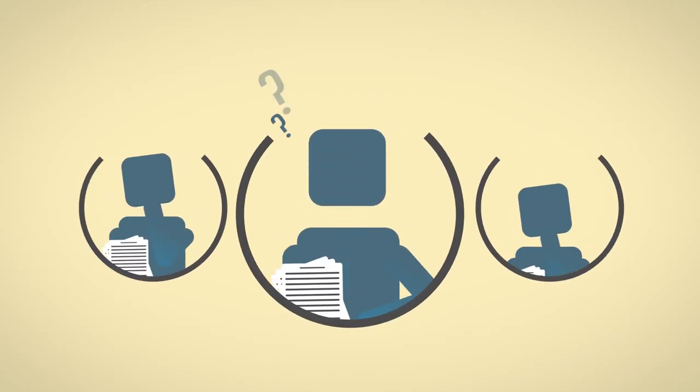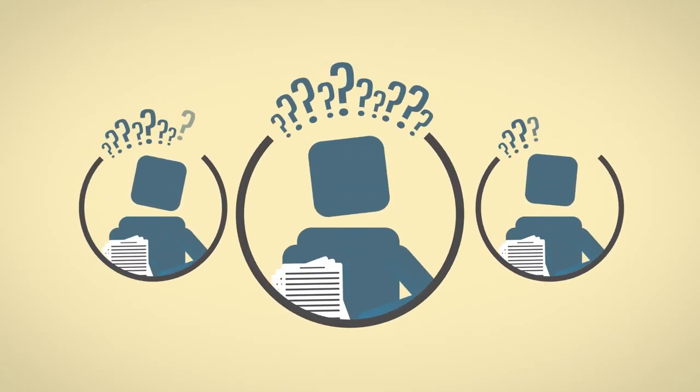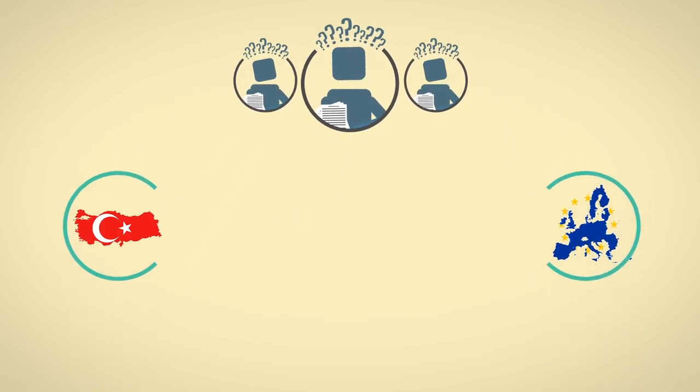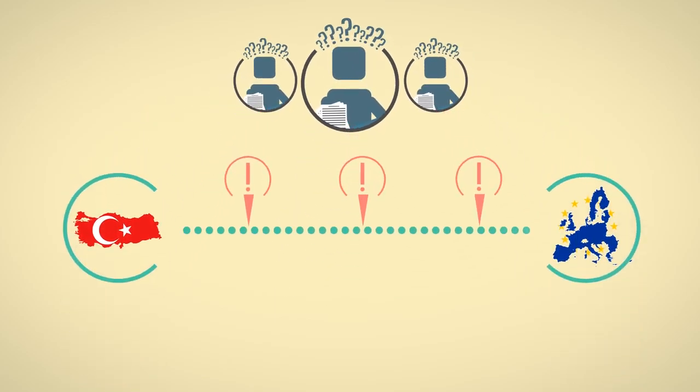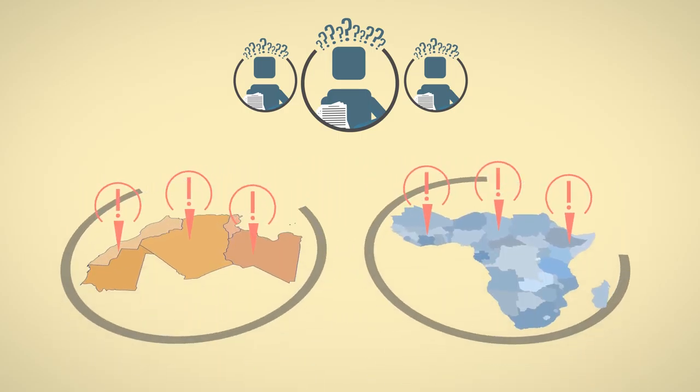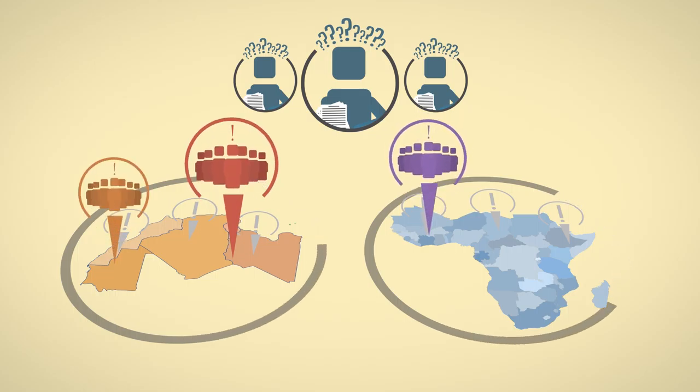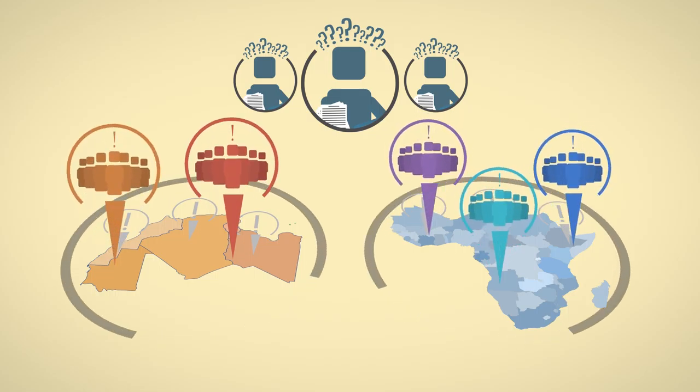Policymakers have broadly failed to take into account the nuance required, that approaches that may have worked, even if temporarily, in reducing flows from Turkey, cannot be replicated in the Maghreb or in sub-Saharan Africa, where the interests of both the countries and the communities is markedly different.